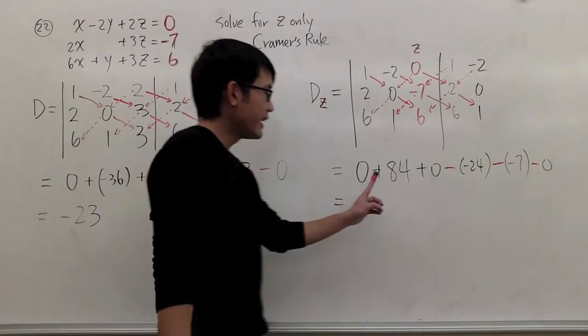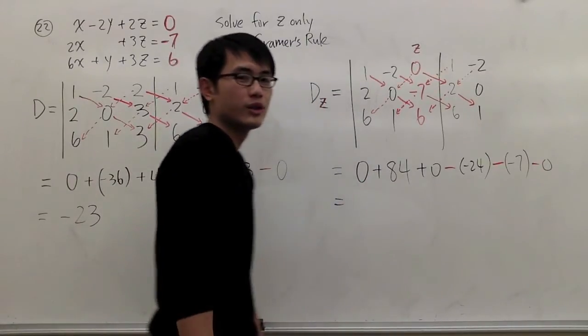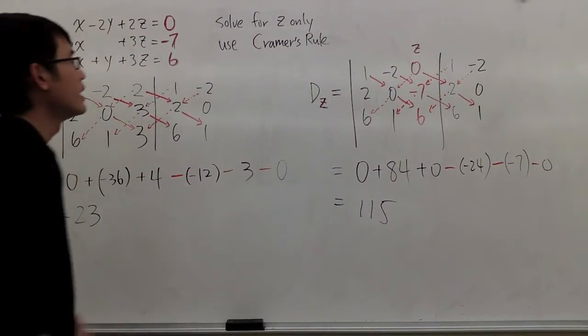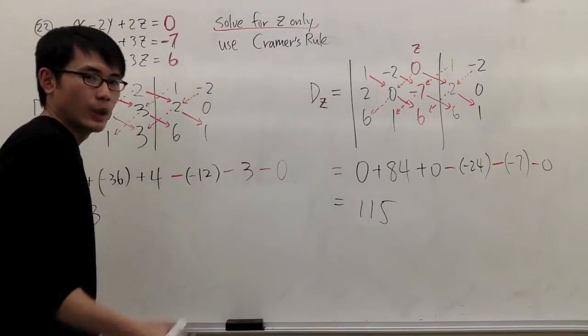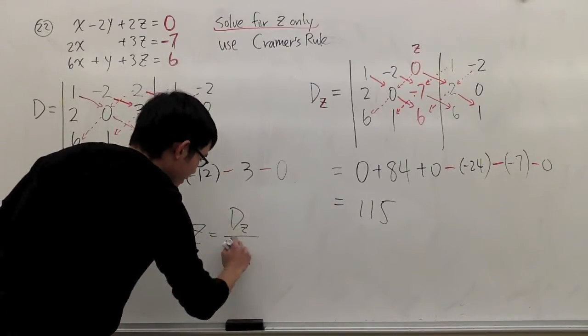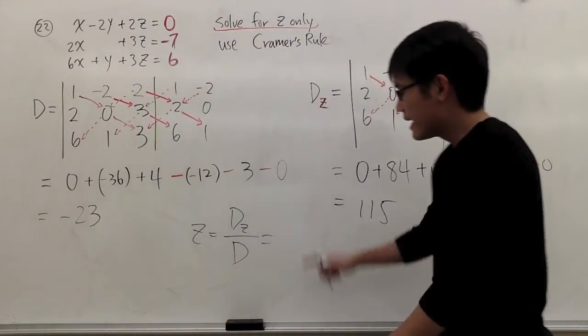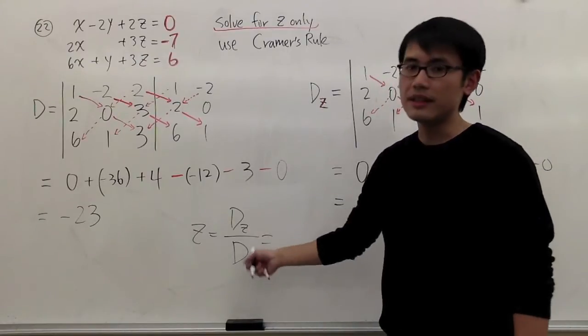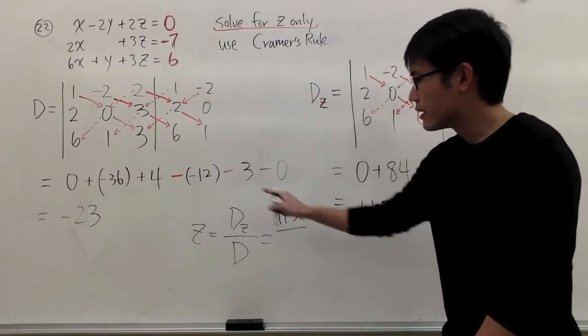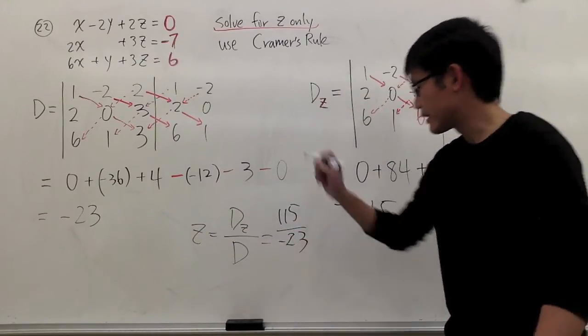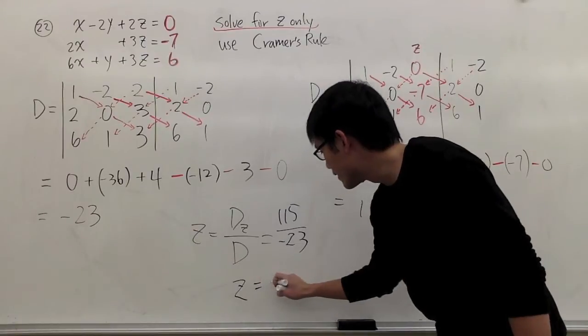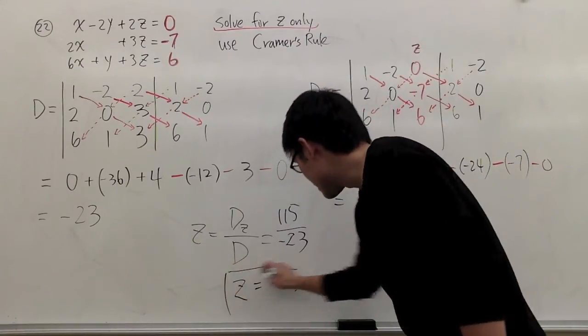So here we have 84, plus 24, plus 7, which is 115. So now we know Dz is equal to 115. And D is equal to negative 23. Our goal is to find out what z is equal to. And the way Cramer's Rule works is, z will be Dz over D. And the way that I think about this is that, put a D in the denominator. That's how I remember it. This is 115 over D, which is negative 23, like that. And 115 over negative 23, we will get z is equal to negative 5. And that's our answer.